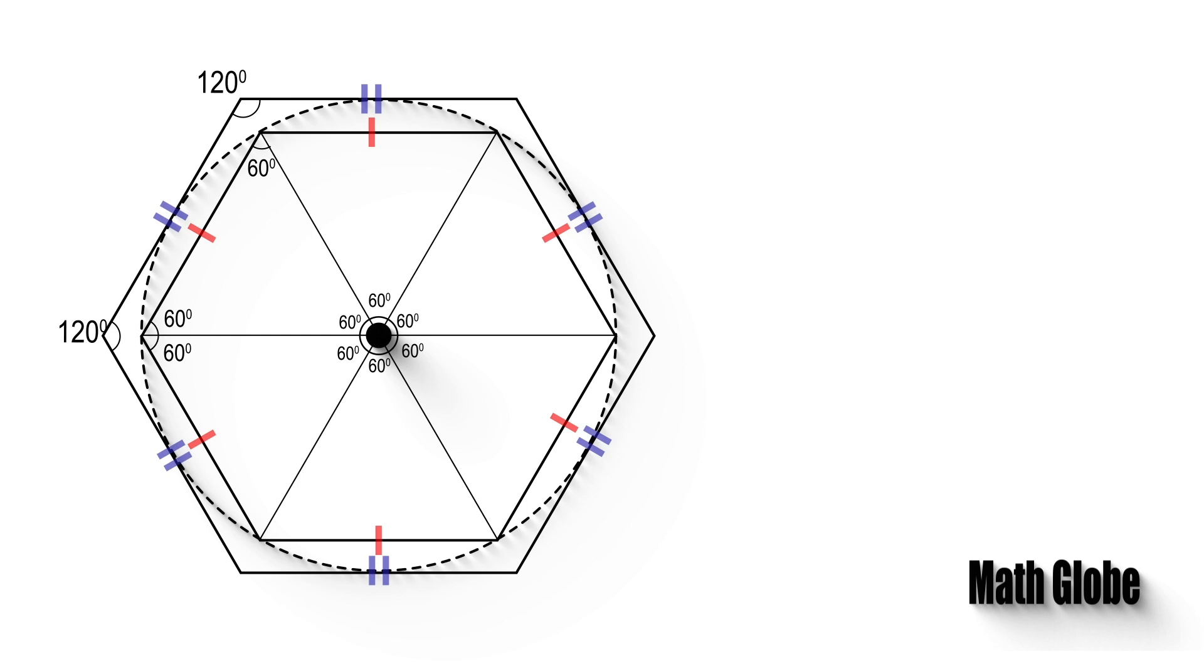As seen from this, 6 equilateral triangles are formed. Next, let's draw the 3 medians of one of these triangles to determine its centroid.